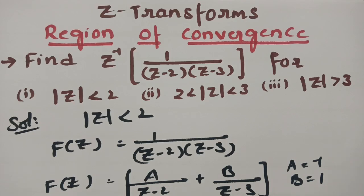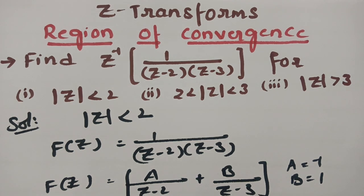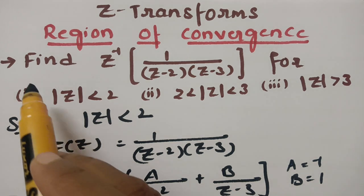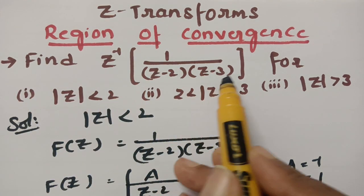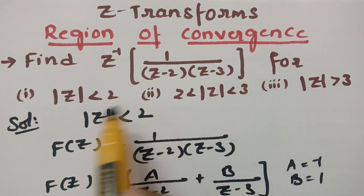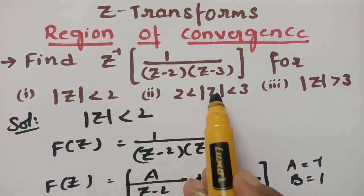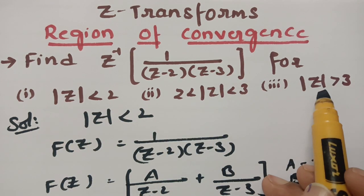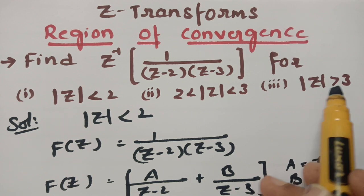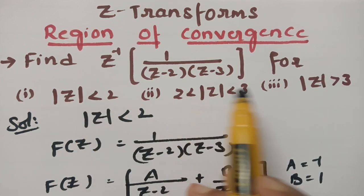In today's video, I am going to find out the region of convergence in Z-transforms, and I am going to explain a short trick for finding the region of convergence. We have to find Z-inverse of 1/[(Z-2)(Z-3)] for three cases: mod Z less than 2, mod Z between 2 and 3, and mod Z greater than 3.